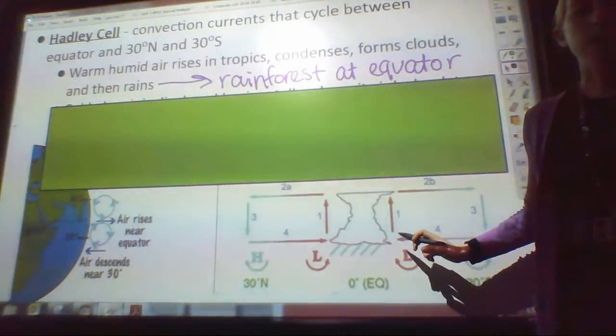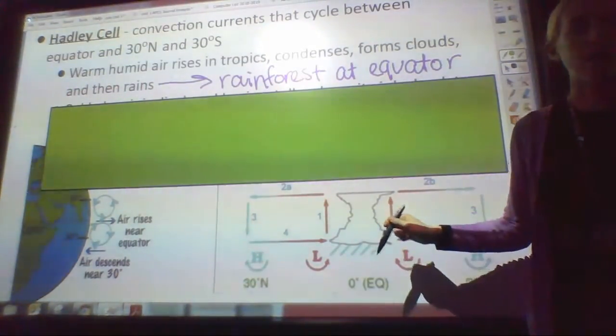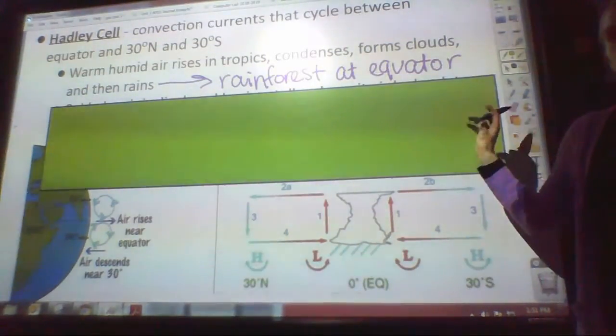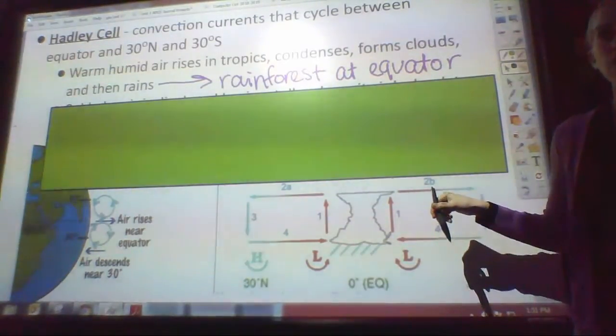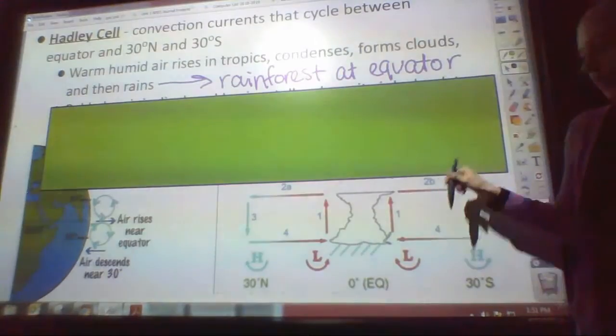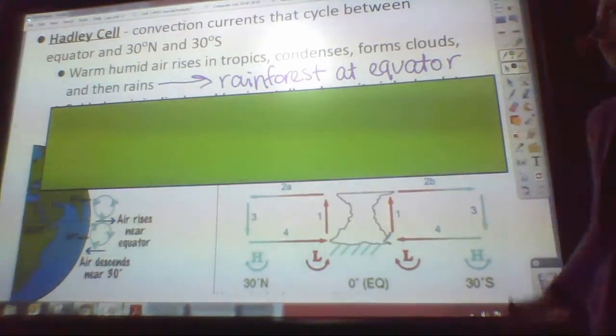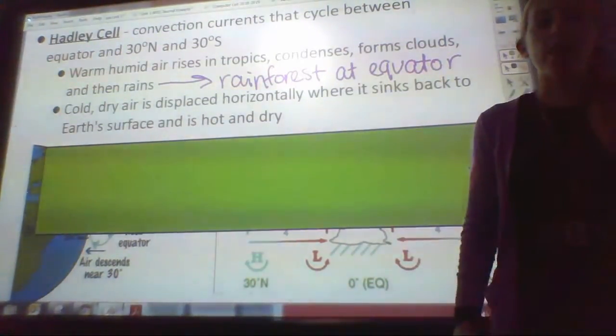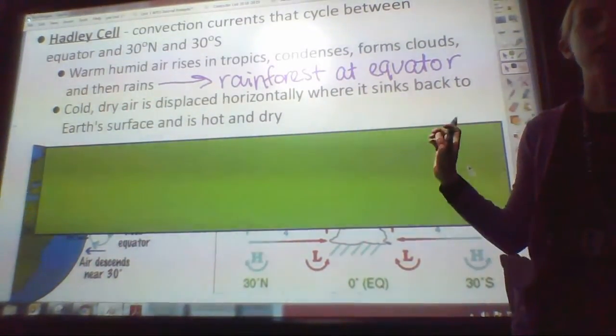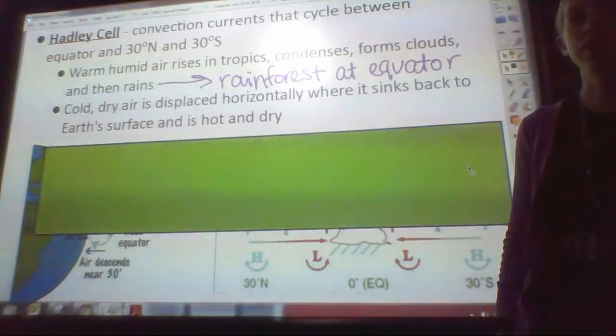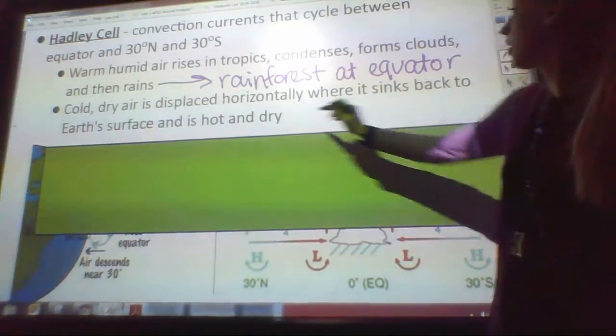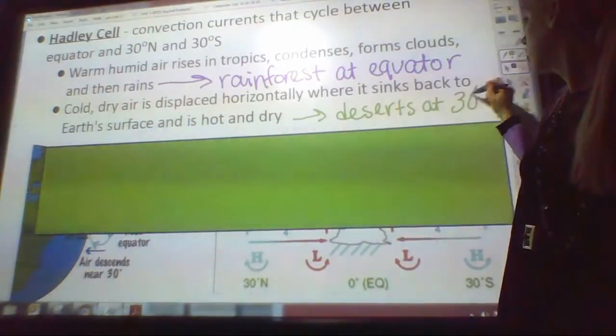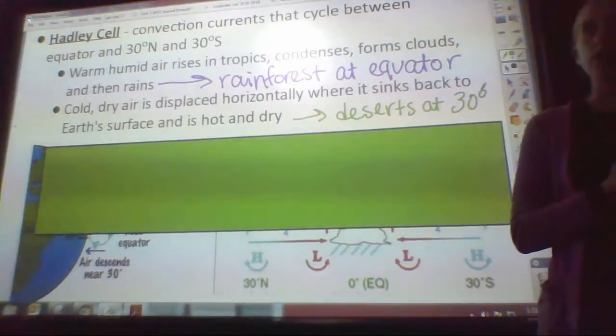We see this in this diagram down here as well, right? Our air, it's getting heated up by the sun at the equator. It rises, causes the rain to fall. Then it's going to move horizontally. As it comes back down, it's going to warm but it's already dry because it lost all of its rain, so that's why we get the deserts at 30 degrees. So after it rains, the cold dry air is displaced horizontally, meaning it is moved horizontally, where it sinks back to the earth's surface and is hot and dry, which is why we get the deserts at 30 degrees north and 30 degrees south.